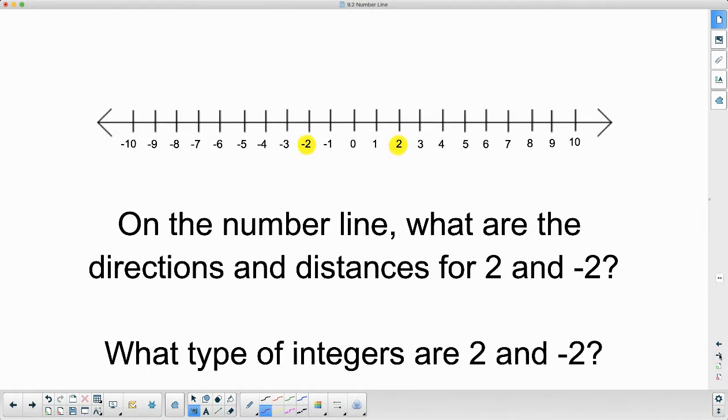So on a number line, it's asking us what direction we would have to go and how far is the distance from the origin. Remember, origin is zero. So if we're going to the positive two, we have to go two to the right.